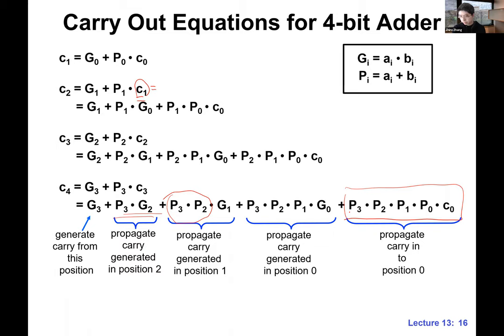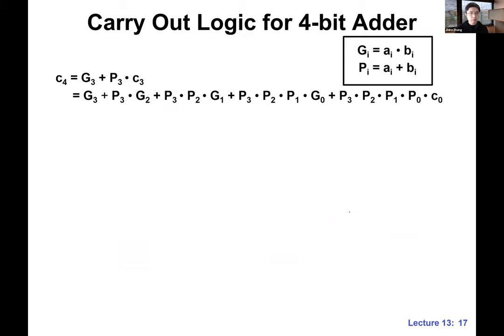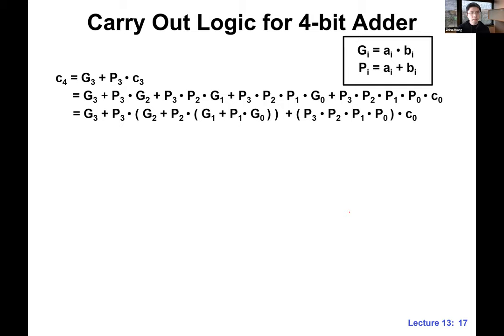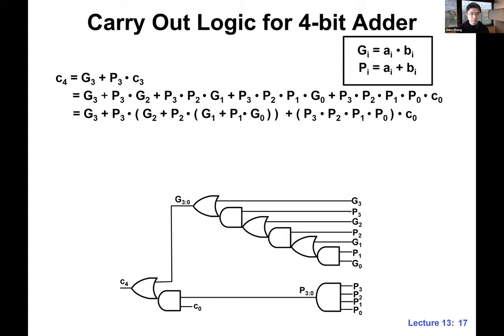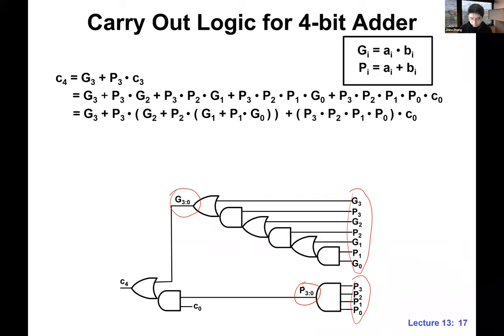We can further rearrange this to minimize the number of gates — factor out some terms. This is the expression and the corresponding circuit, which seems pretty complicated. These are the G and P values we just defined. We also define group signals like G_{3:0} — this tells us whether there's any carry generated from this bit range. Same for propagation P_{3:0} — is there anything being propagated from this entire bit range? This is how we compute C4 using group G and P.